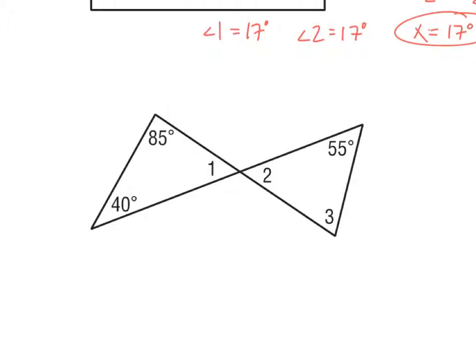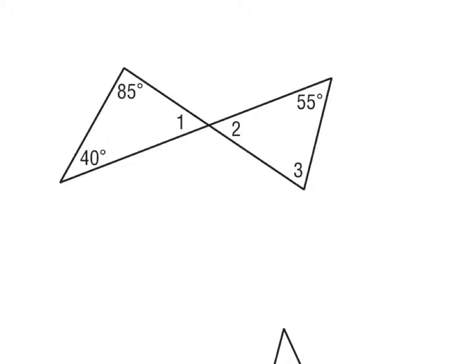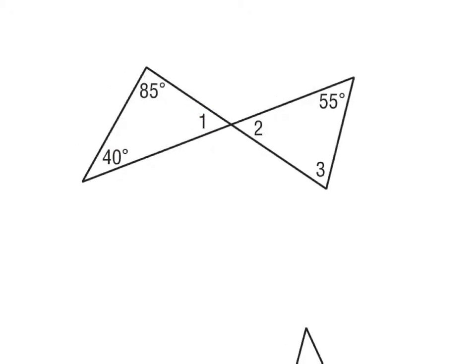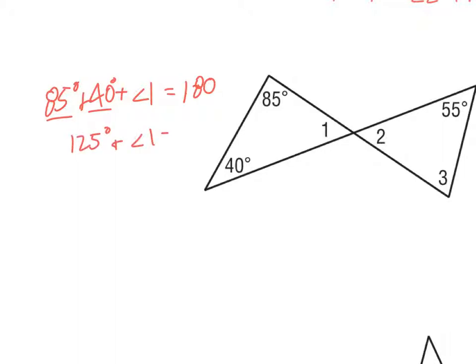Over here I've got a figure where I need to find the measures of angles 1, 2, and 3. Looking at this picture, I notice I've got 85 degrees, 40 degrees, and angle 1 in the same triangle. I can set up 85 plus 40 plus angle 1 equals 180. Combining 85 and 40 gives 125, so 125 plus angle 1 equals 180.